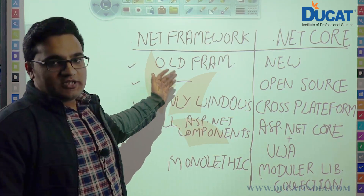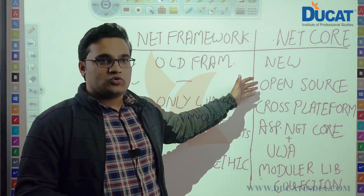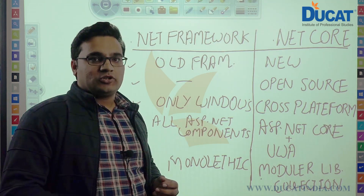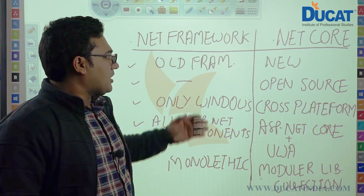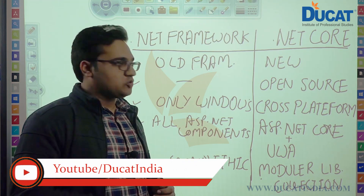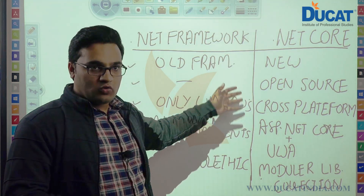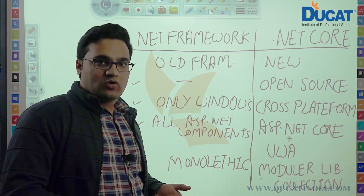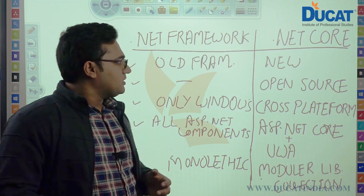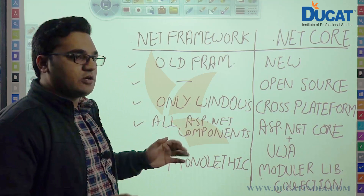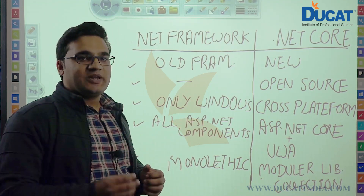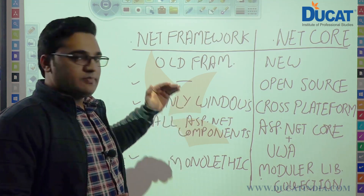A major difference between these two is that .NET Core is open source. Since last many years, .NET leaders and enthusiasts have been talking about .NET being open source, and recently Microsoft launched it as open source. This means we can download the code of .NET Core, make changes, and participate in the .NET community on GitHub. But .NET Framework is not open source — we only have pre-built libraries provided by Microsoft.